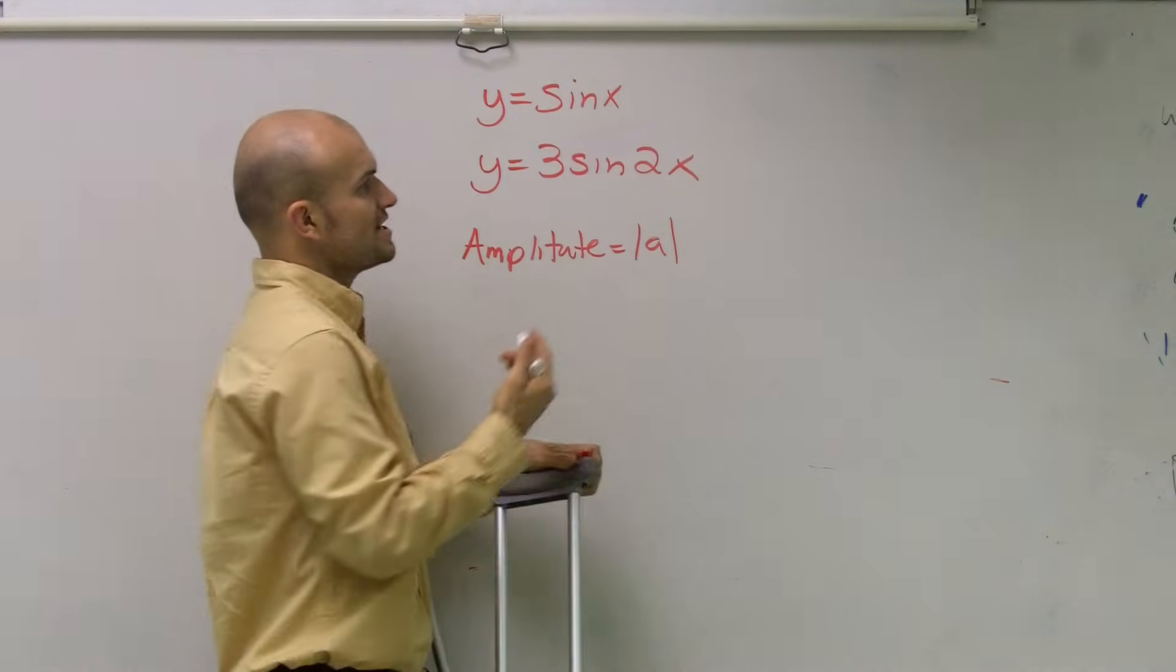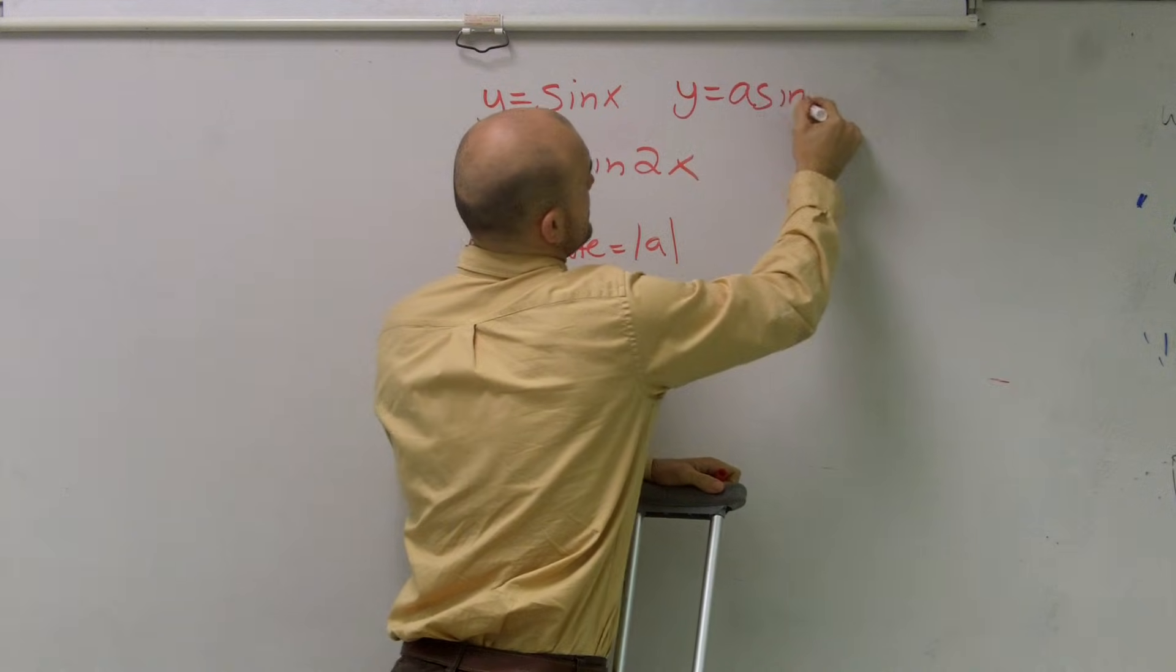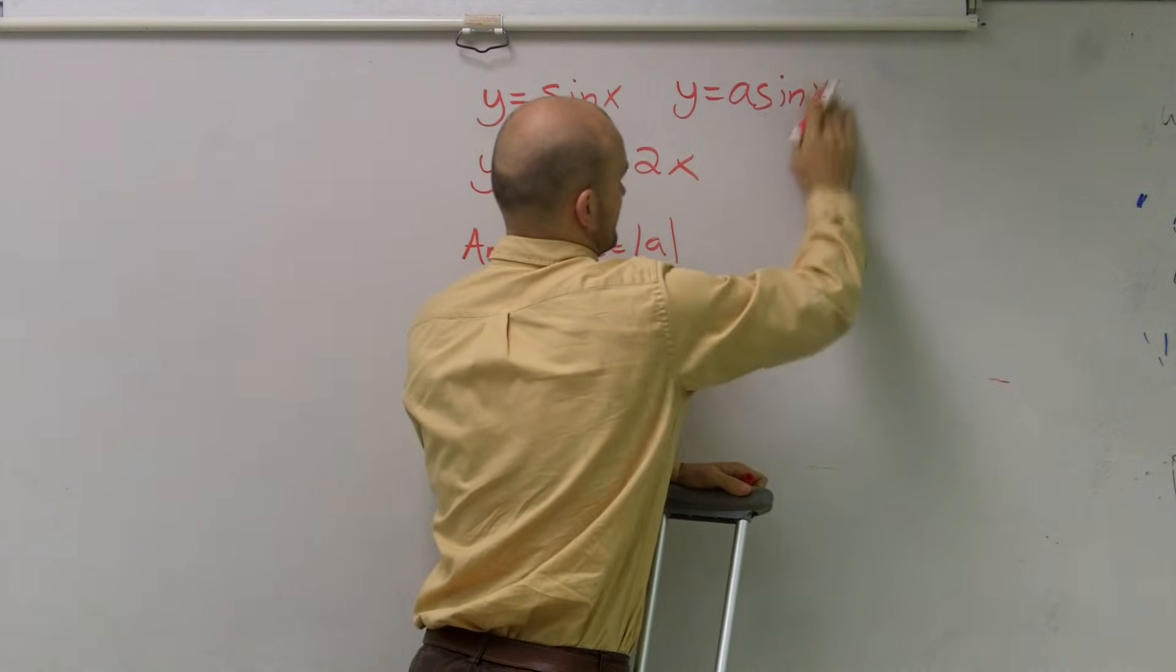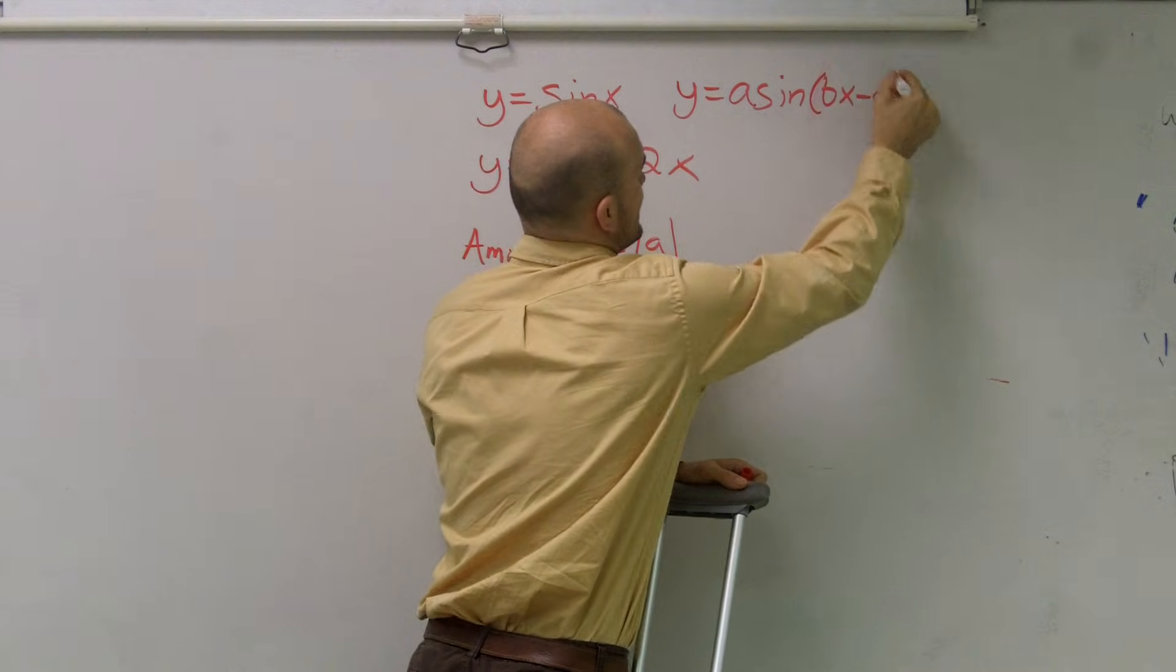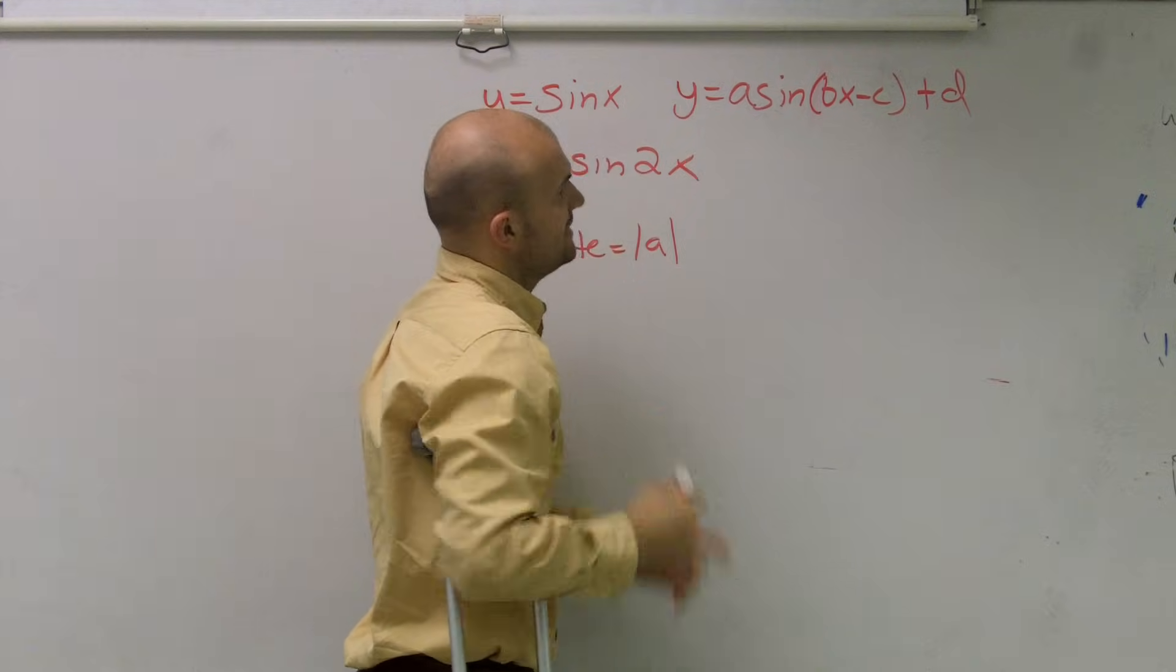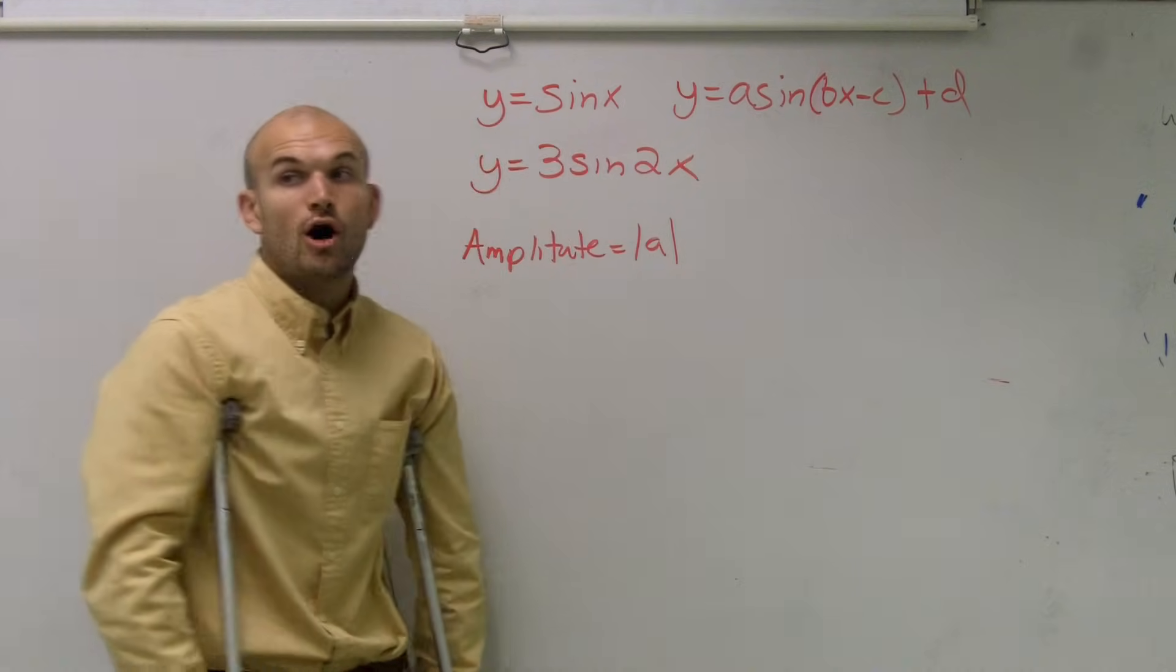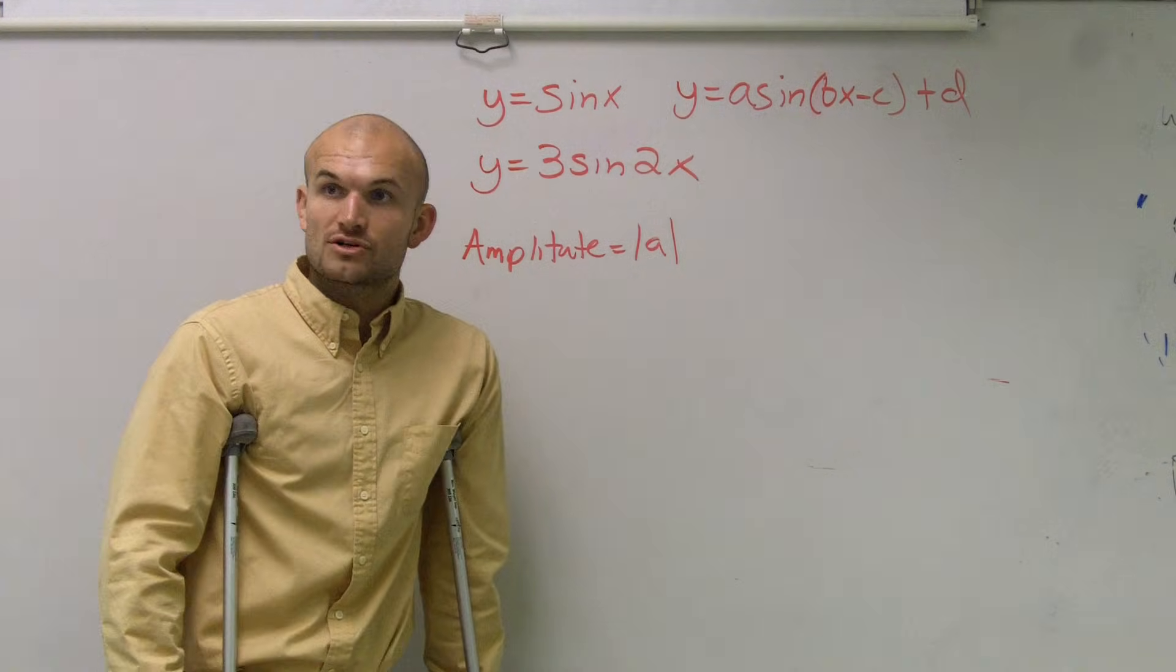However, if you want to write out the transformations, we write A sine of... A, BX minus C plus D. And what all those A, B, C, and D do are tell you all the possible ways we can transform our function.